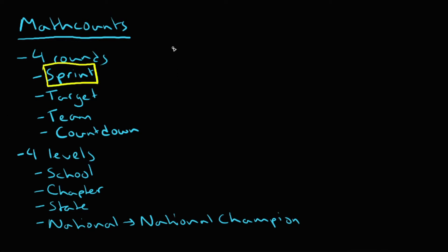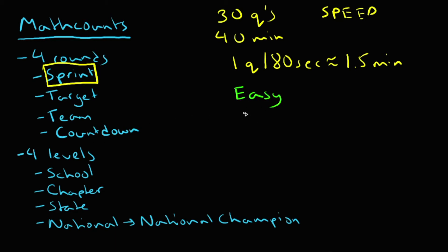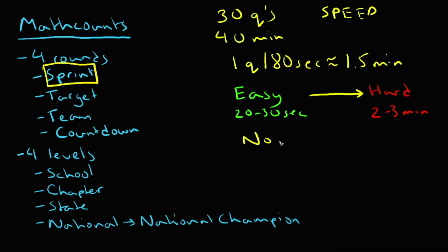Now let's focus on the sprint round. The sprint round is 30 questions in 40 minutes, so it really emphasizes speed. If you average out your time, it comes to roughly 80 seconds per question, about a minute and a half. But it won't spread out perfectly — at the beginning you'll have easy questions that take 20 to 30 seconds, and as you progress you'll get to harder questions that can take a full two to three minutes. It's all about cutting corners and getting every question done as fast as possible.